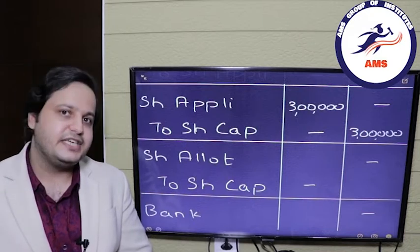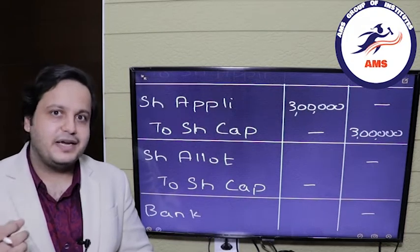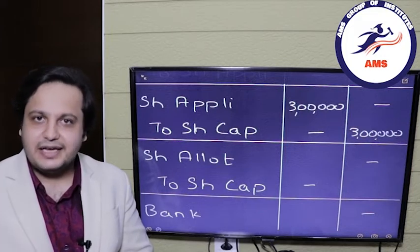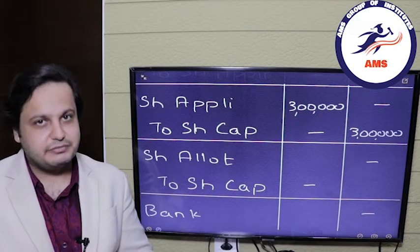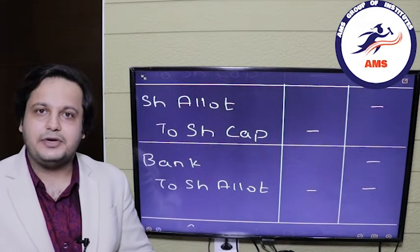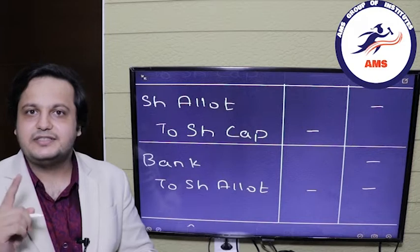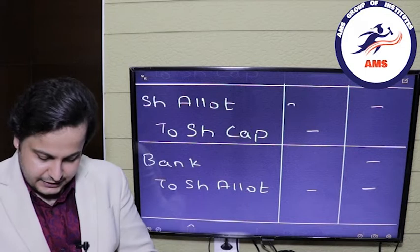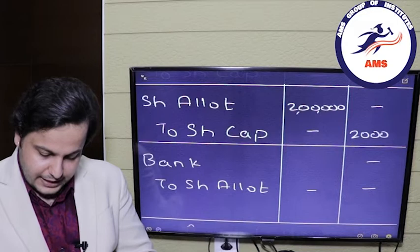Next we move towards share allotment. There was a default in the allotment money, but we follow the trend: first we capitalize the allotment money, then pass the payment entry. The capitalization entry will be share allotment account debit to share capital. The amount is 1 lakh shares multiplied by rupees 2, which is 2 lakh rupees. So share allotment is debited by 2 lakh rupees and share capital credited by 2 lakh rupees.